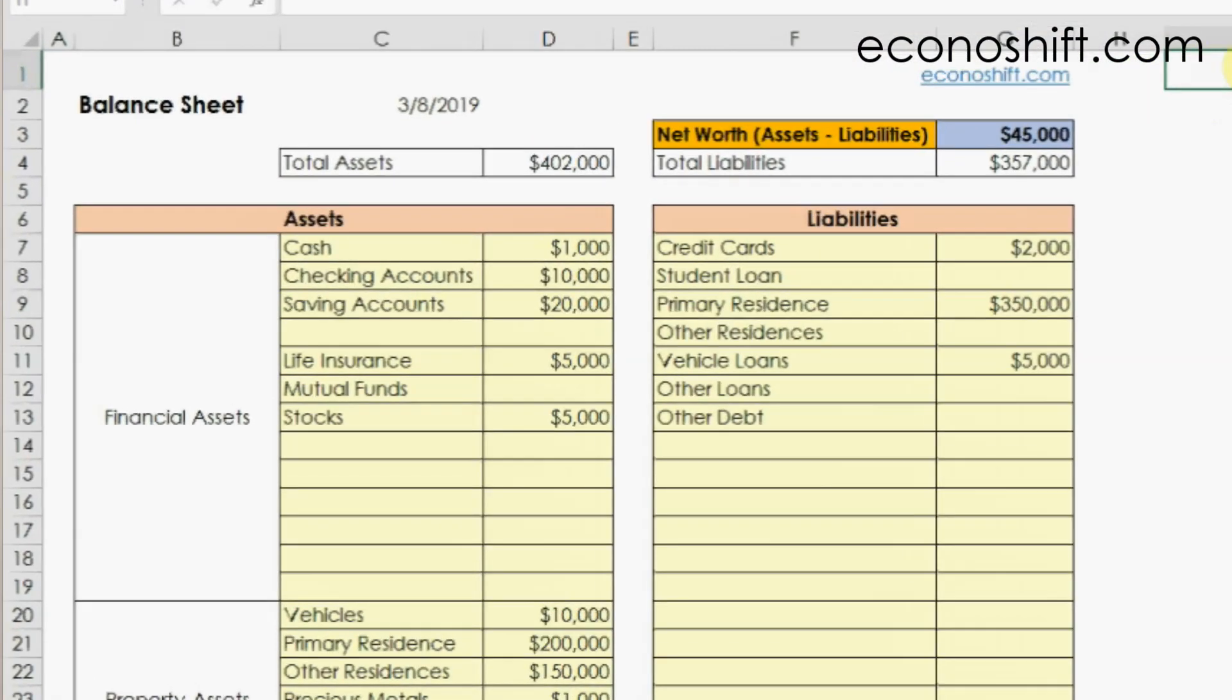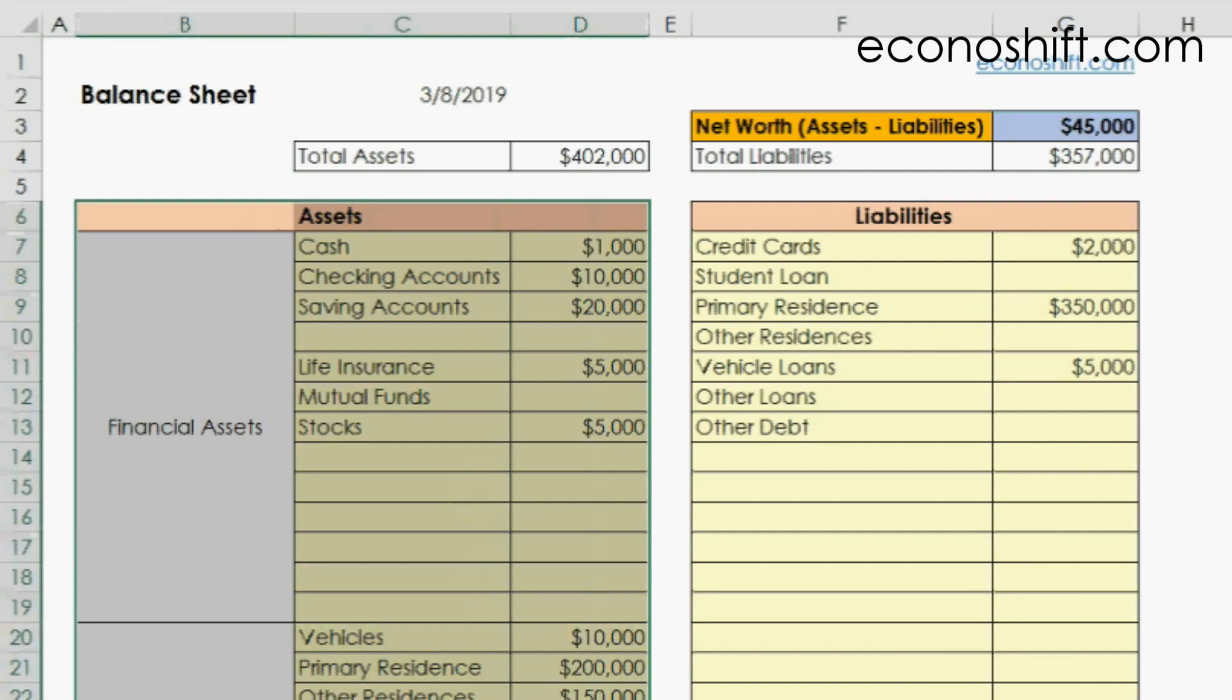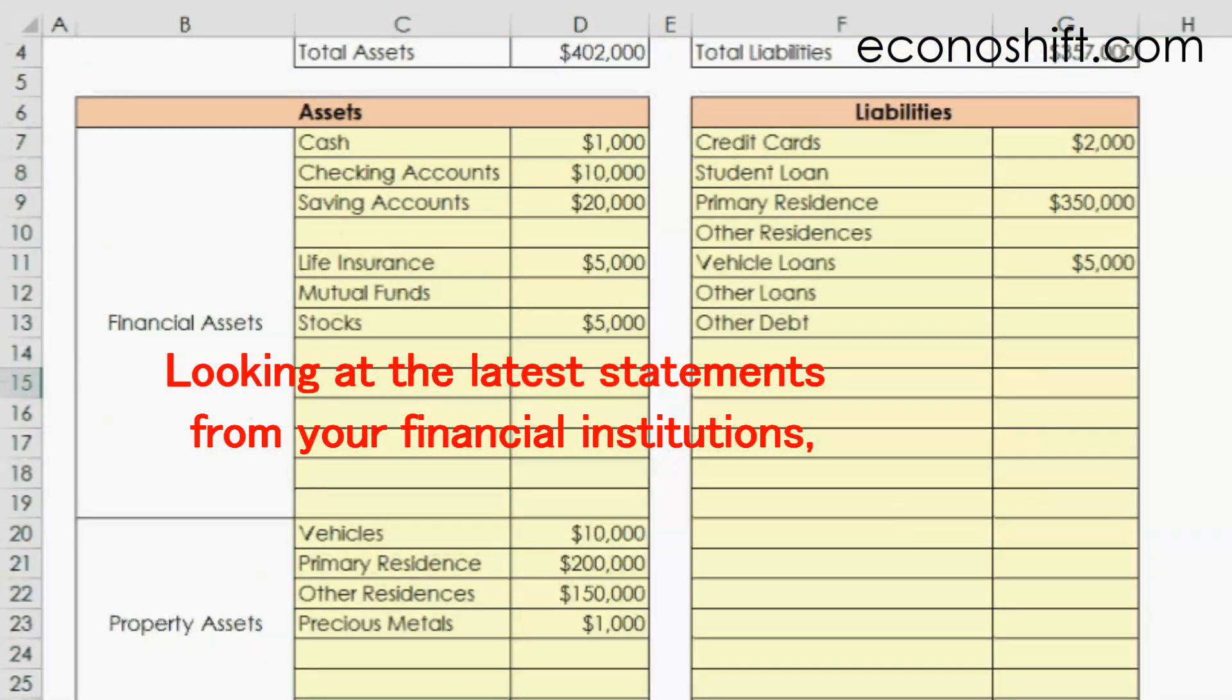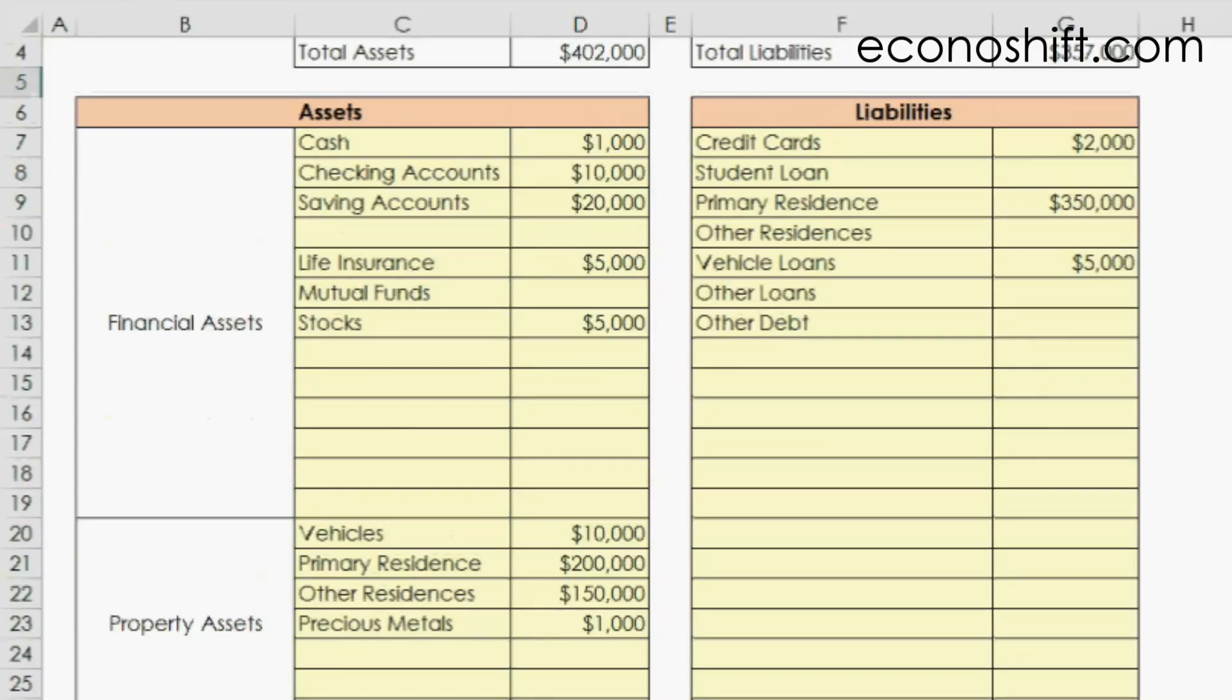There is an assets column on the left side and a liabilities column on the right side. Input all your assets into the assets column. Looking at the latest statements from your financial institutions, input all the balances of your financial assets, such as cash, savings, mutual funds, stock, and so on.